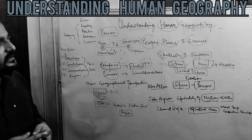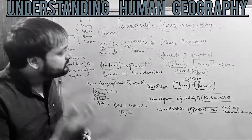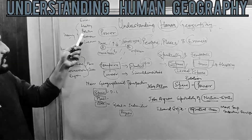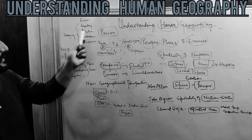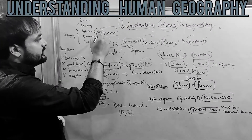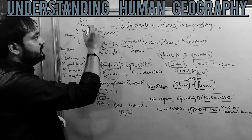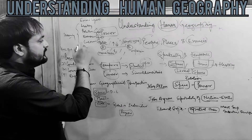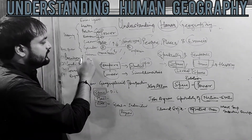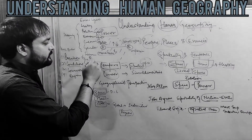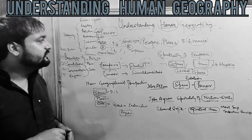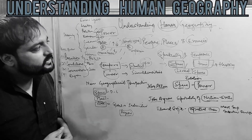Broadly, human geography can be further classified into many subfields. From what we discussed, you can see that politics deals with political geography, then there is economic geography, cultural geography, environmental geography, and there are so many more like gender geographies, feminist geographies, population geography, and so on. There are so many geographies which have evolved from human geography.